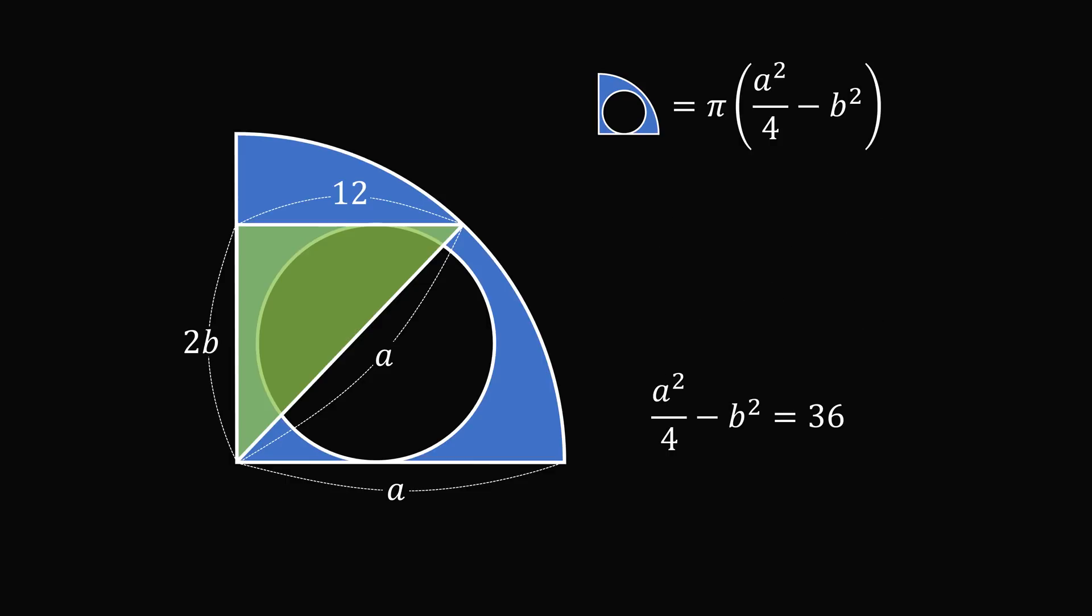All we need to do now is substitute in for a² over 4 minus b². So we get the area shaded in blue is equal to 36π. And amazingly, we solve for the answer without knowing the radius of either the quarter circle or the small circle. Amazing!